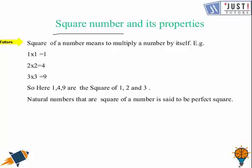Square of a number means to multiply a number by itself. Like you can see the example 1 times 1 which will give you 1, 2 times 2 equals 4, 3 times 3 equals 9. So here 1, 4, 9 are squares of 1, 2 and 3.